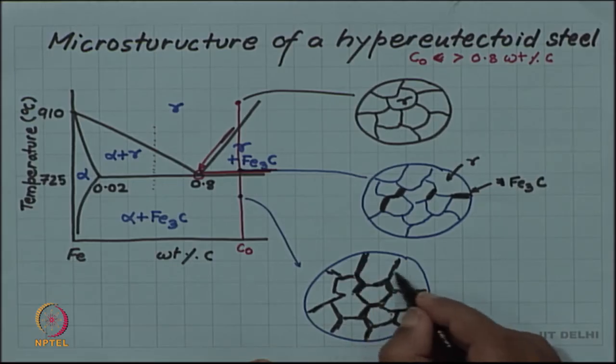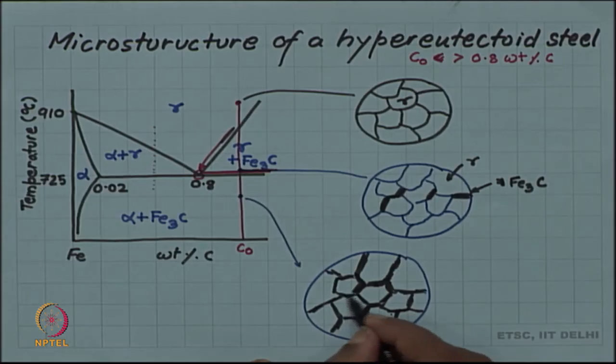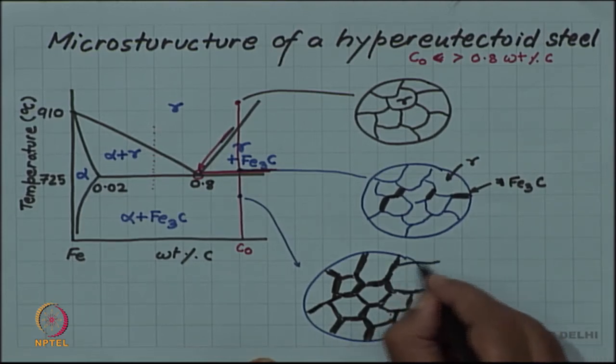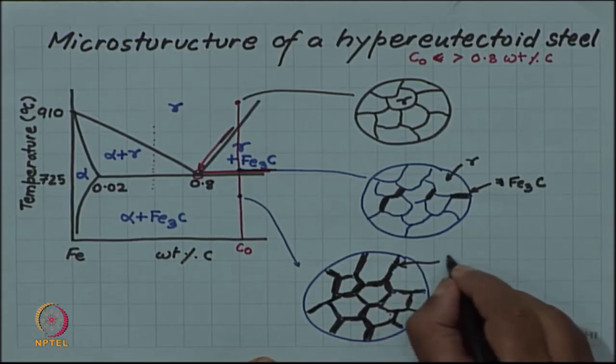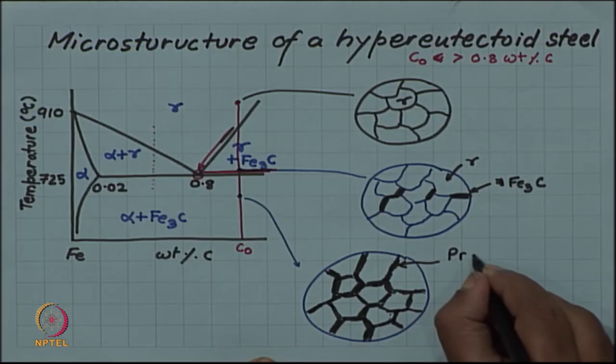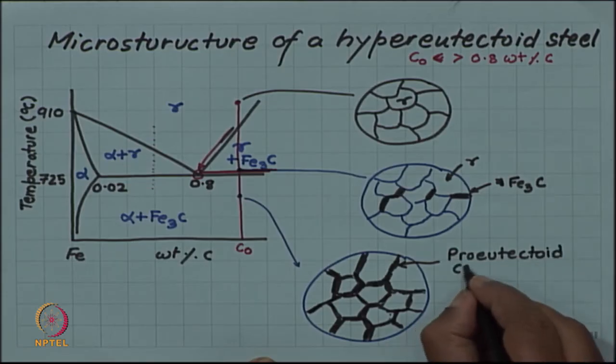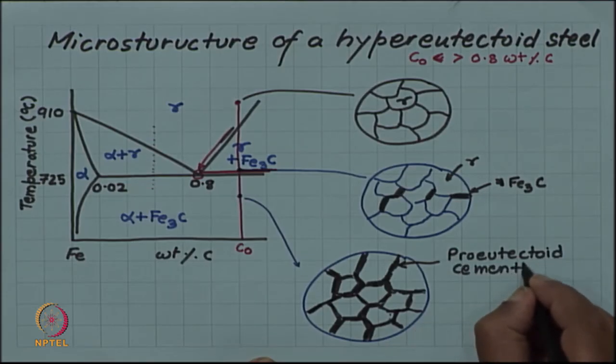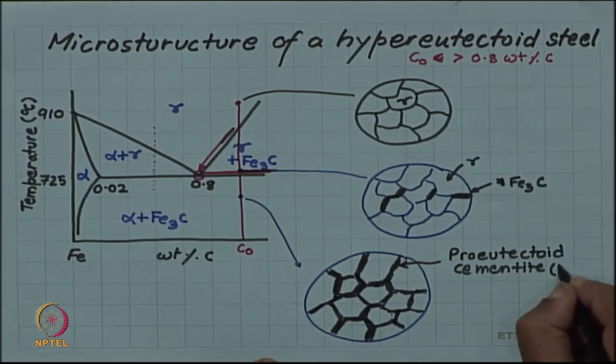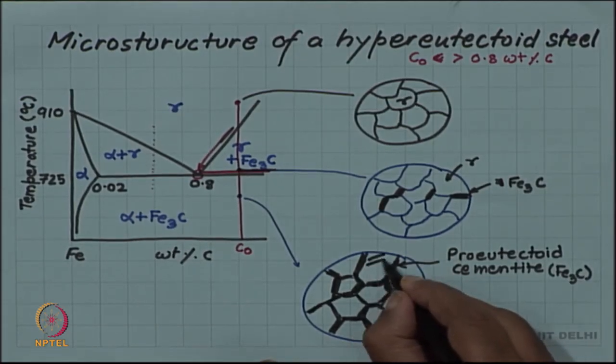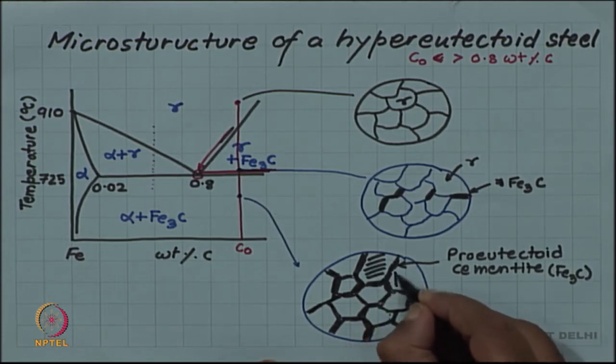I am assuming that the composition is such that there is sufficient Fe3C to form along all grain boundaries. You will have a grain boundary network of Fe3C, but this Fe3C now using the same nomenclature will now be called proeutectoid cementite or Fe3C.